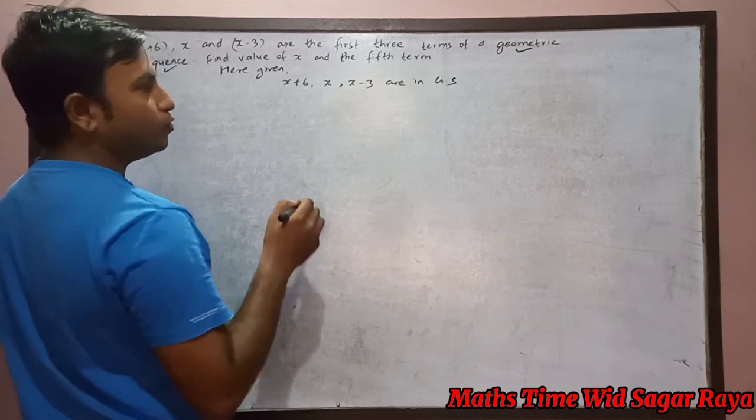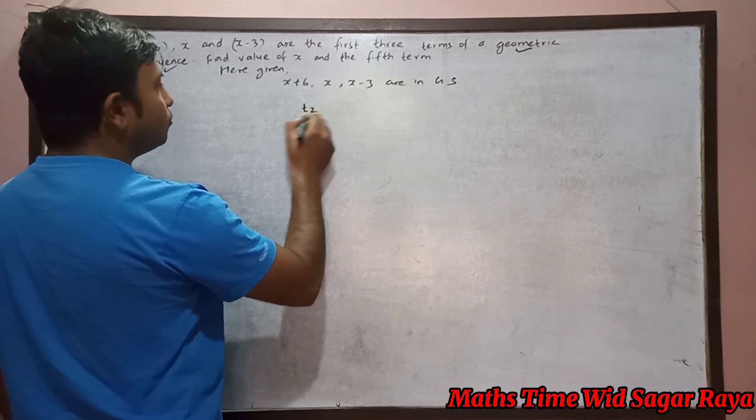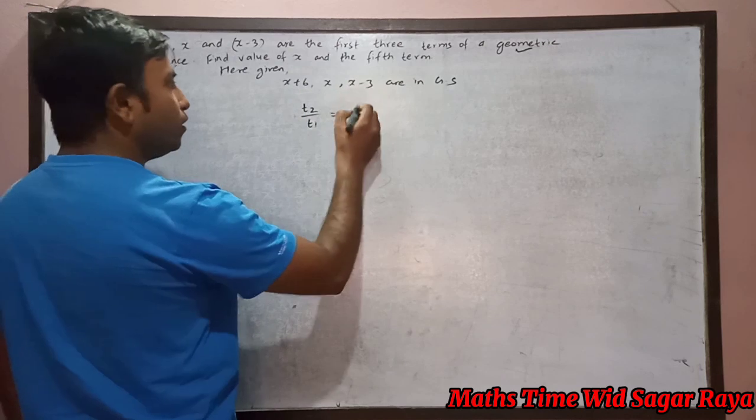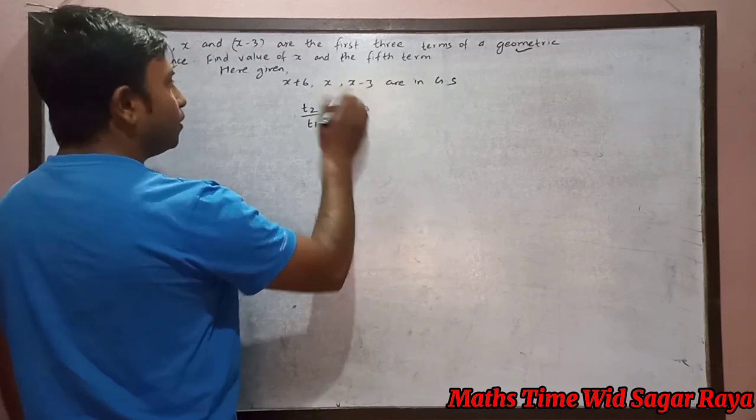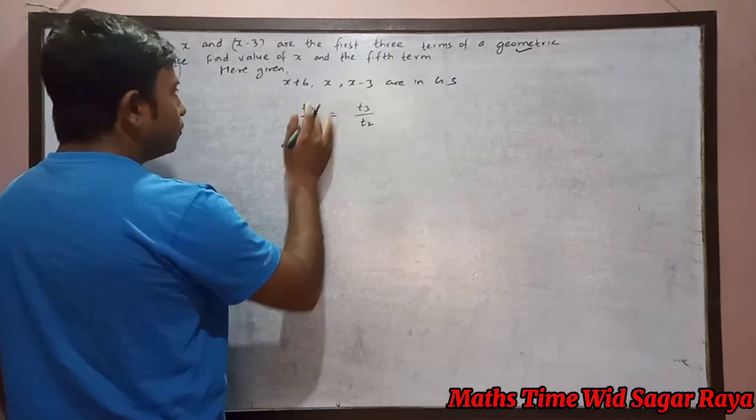In a geometric sequence, the common ratio is always equal. So if I divide t2 by t1, and if I divide t3 by t2, both ratios are equal.